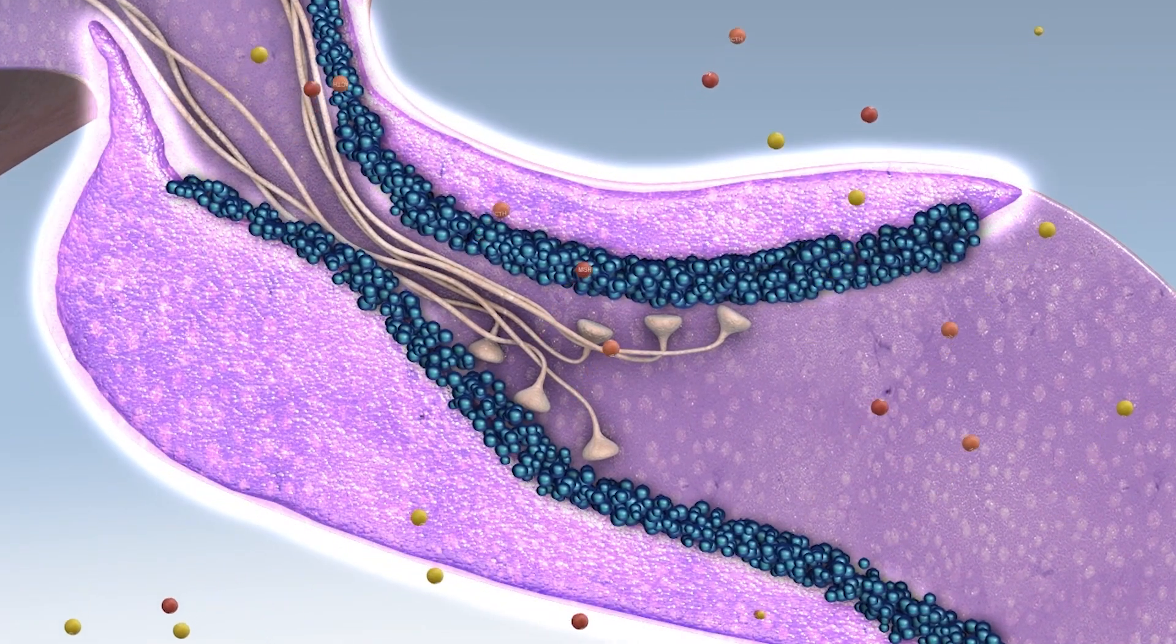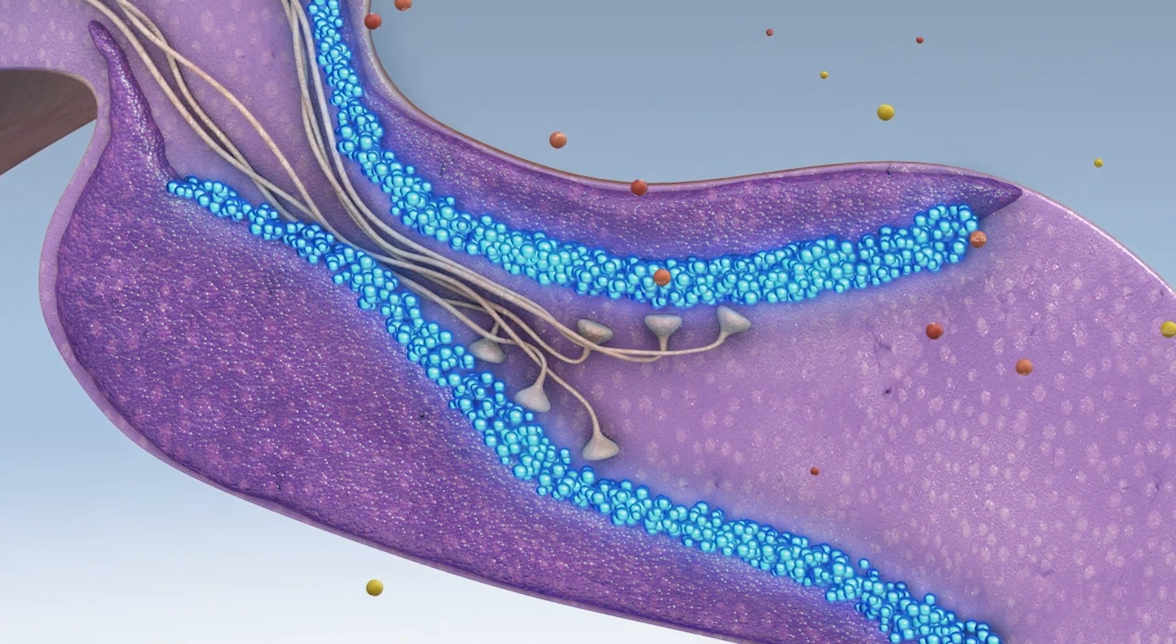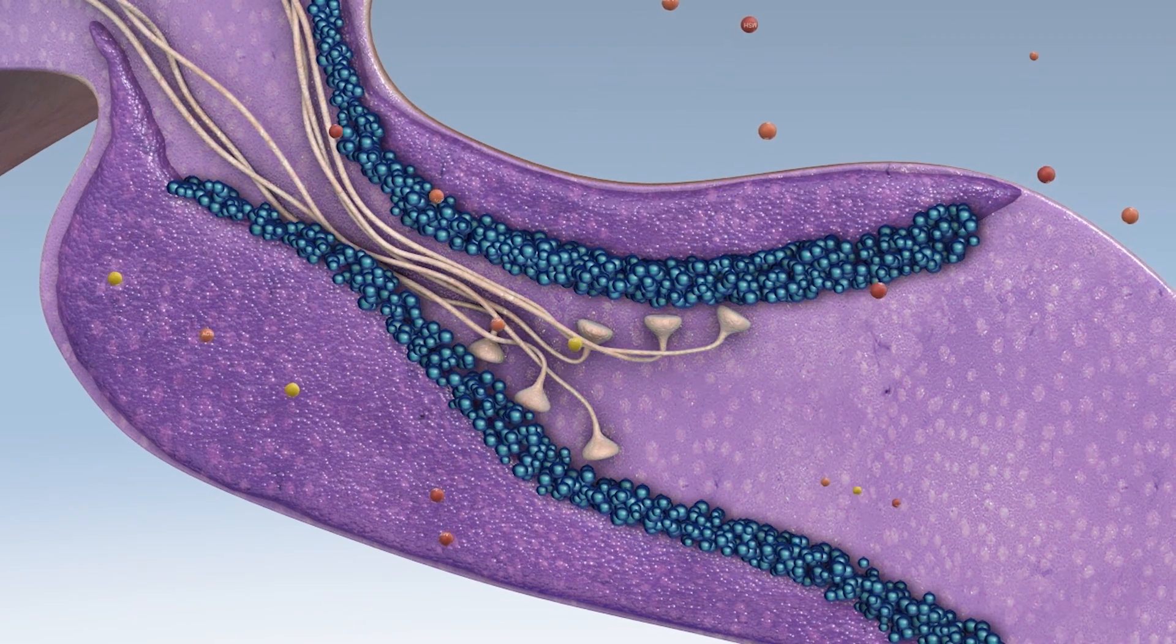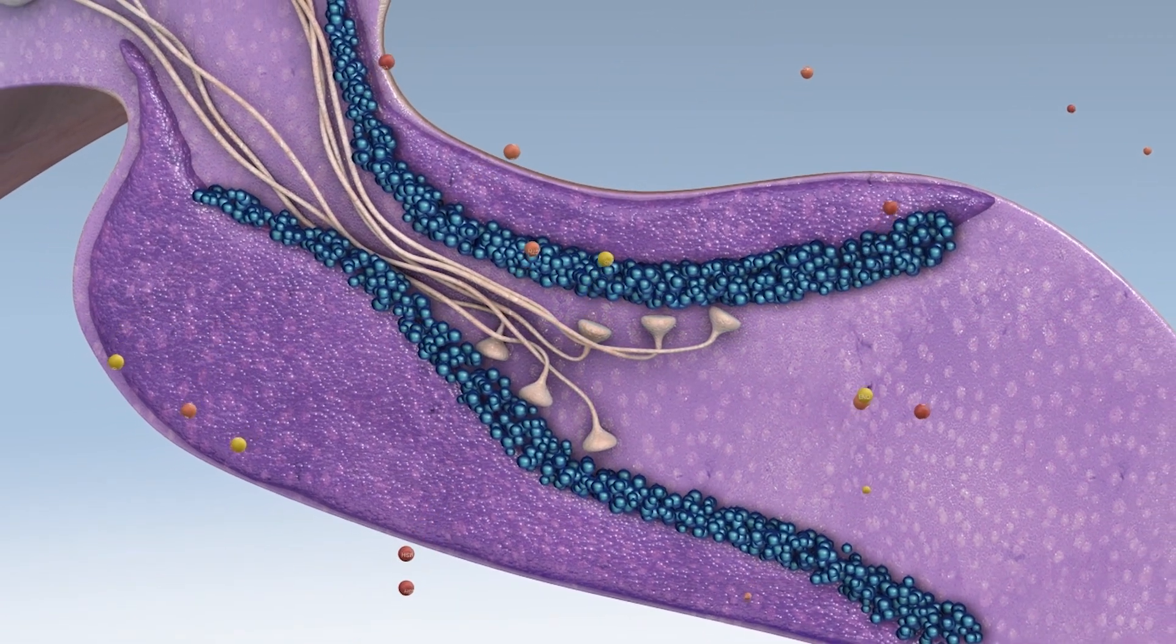The pars distalis, the pars intermedia, and the pars nervosa. The intermediate lobe, or pars intermedia, is affected in PPID.